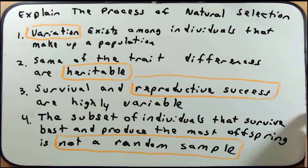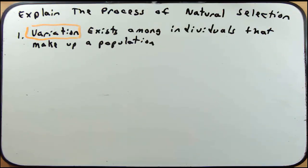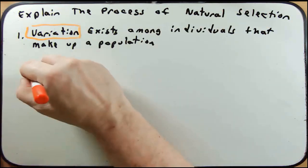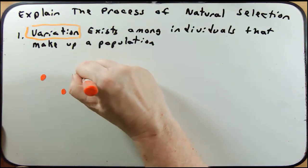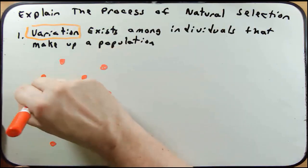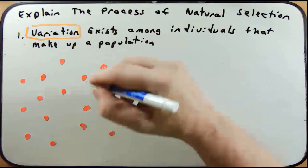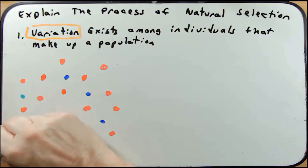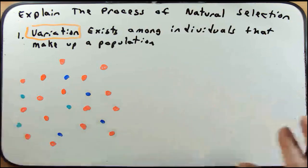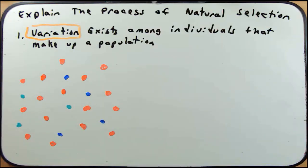Let's talk about each postulate using a population of beetles. For the first postulate, within this population there are more red beetles, but there is variation — some blue beetles and some green beetles. Variation exists in every population; they're not all going to look the same. Variation can be physiological, size-based, behavioral, visible, or completely cellular. For the second postulate, the traits of these beetles are determined by their genes, and the variation exists because the population has multiple alleles — red beetles have two red alleles, blue beetles have two blue alleles, green beetles have their own alleles. It's the same gene giving color, just different versions.